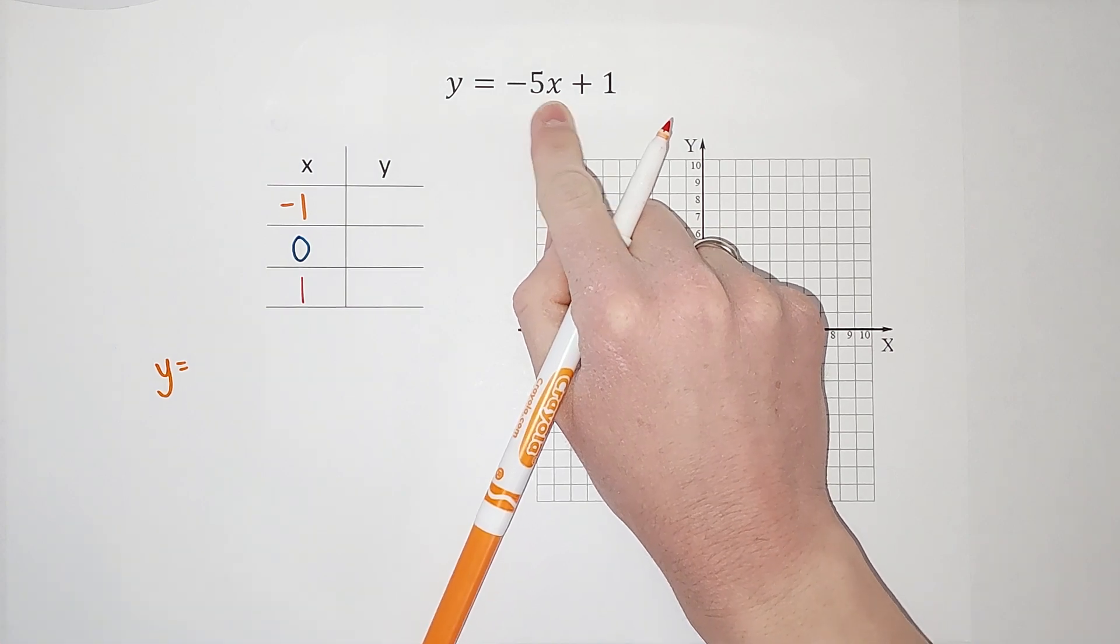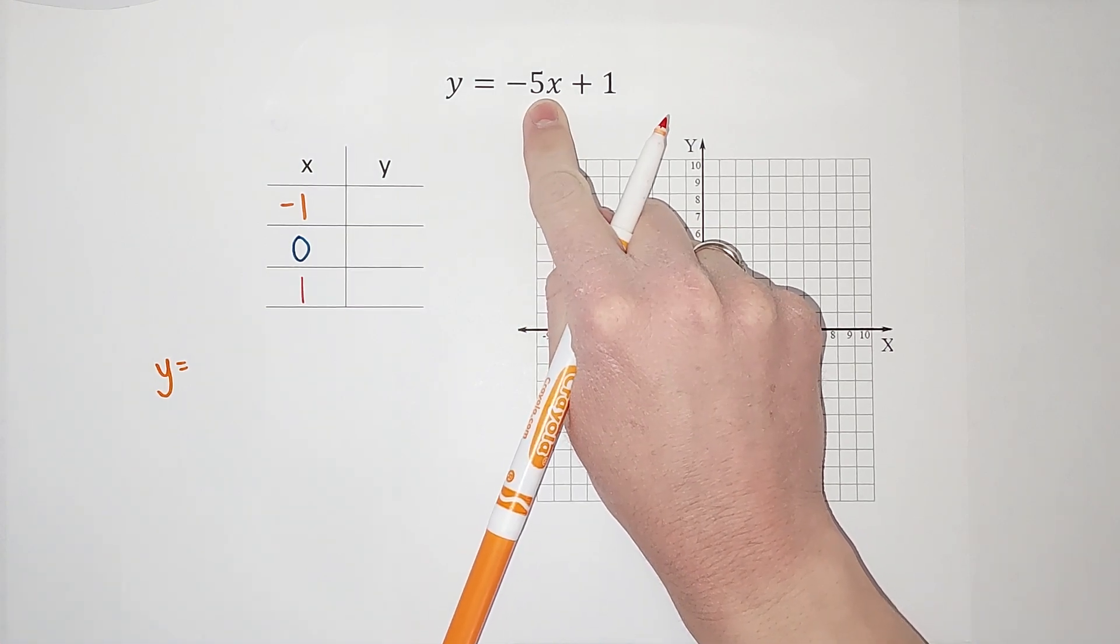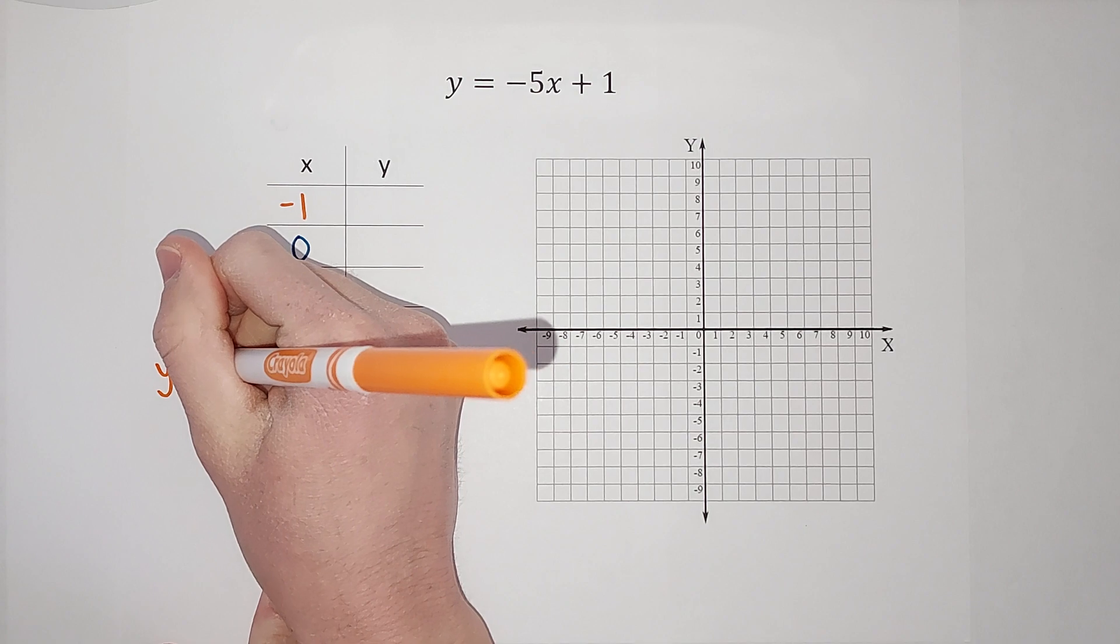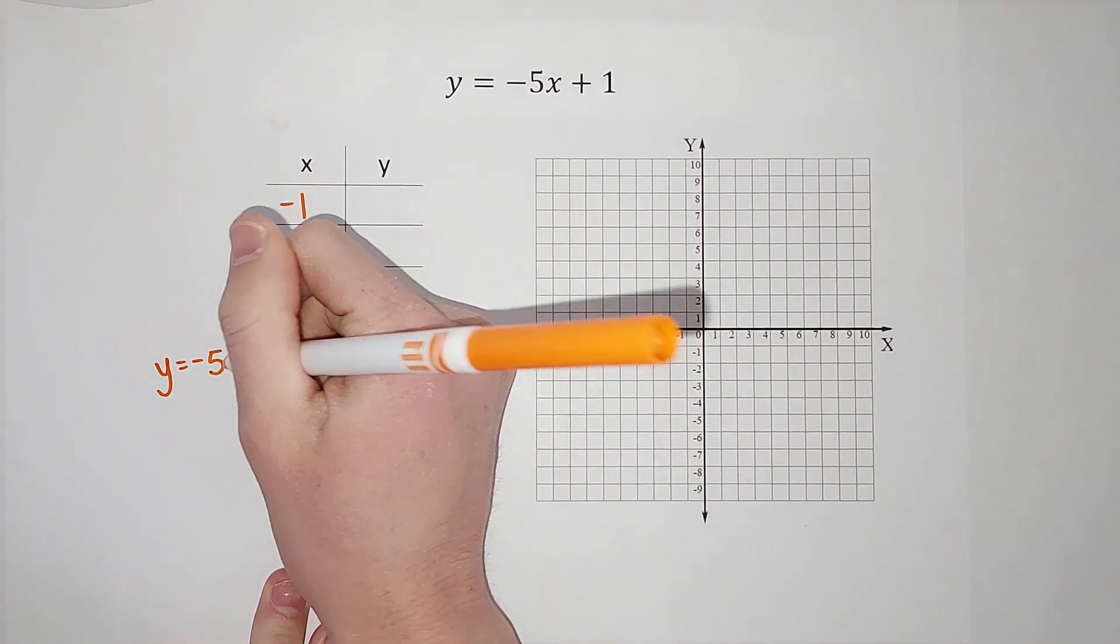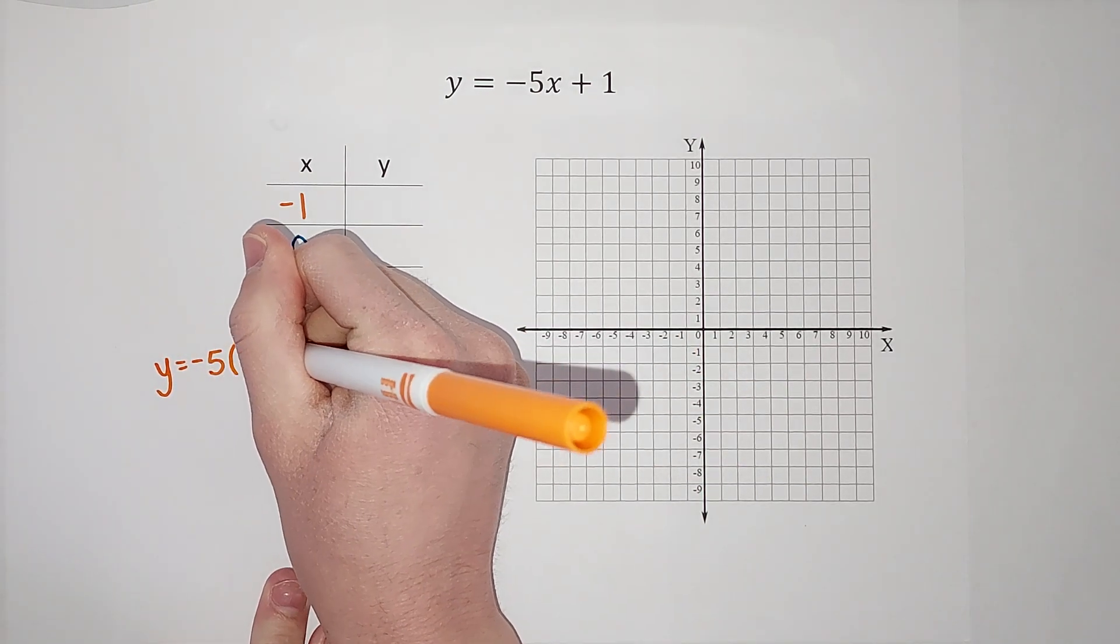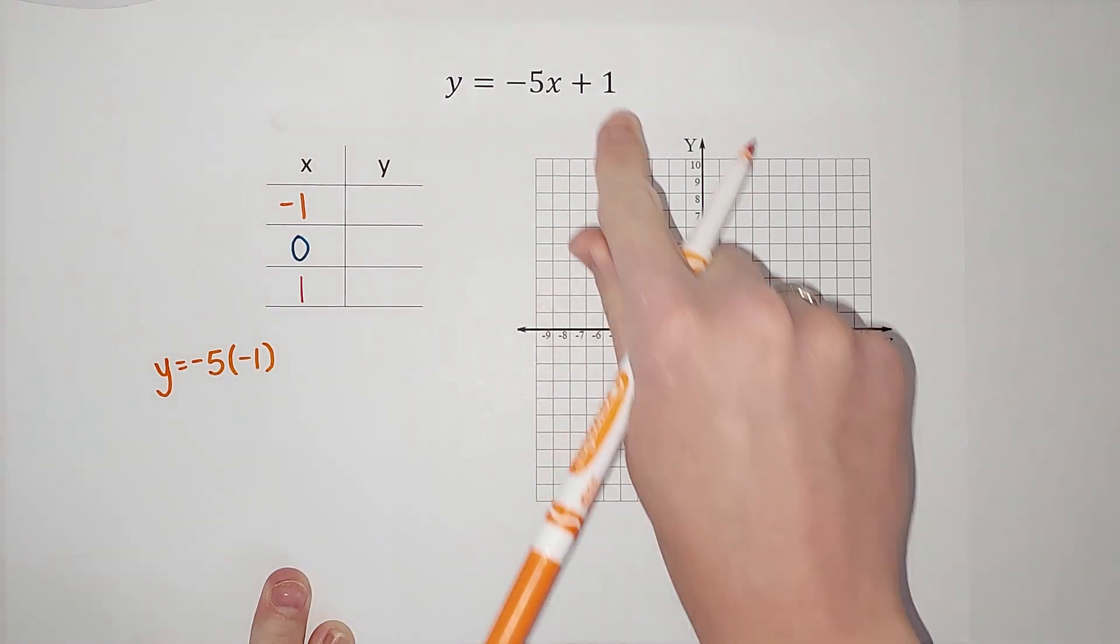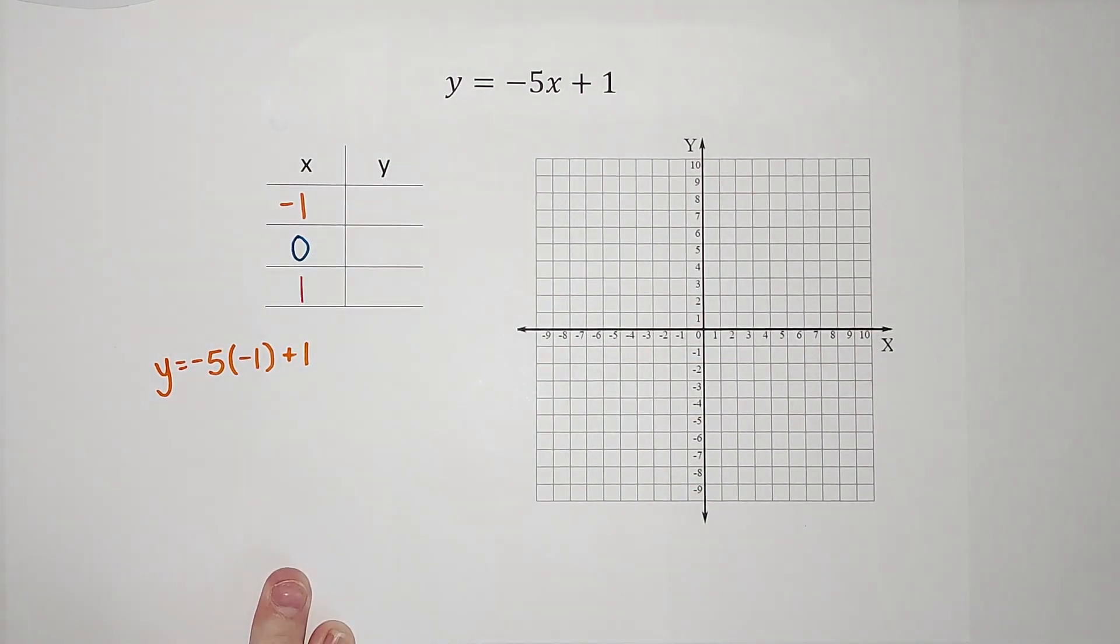negative five times X. When these are written right next to each other, they're being multiplied. So when I plug in a number, we usually like to write it with parentheses. So I'm going to do negative five times negative one plus one.